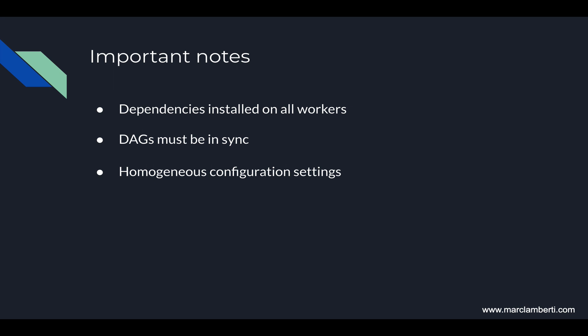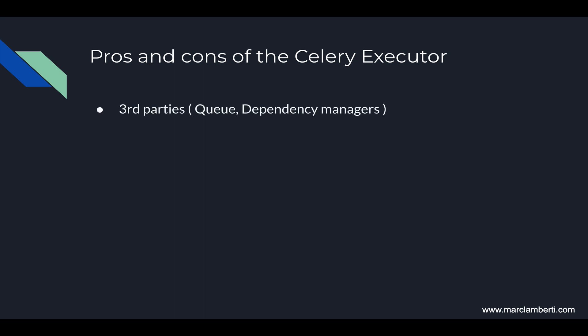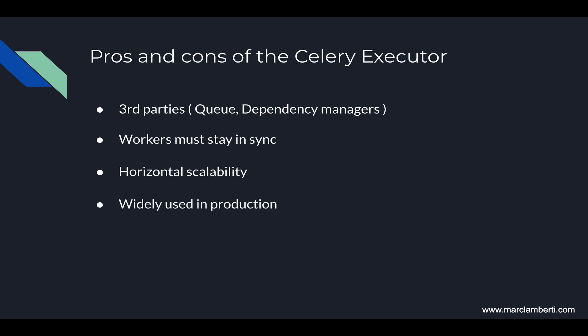Moving from the local executor to the Celery executor is another story, so be ready for it. As for the pros and cons: on the downside, there are third-party tools to maintain such as RabbitMQ and a dependency manager, which increases the complexity of your architecture and the learning curve for your teammates. Workers must also stay in sync — same DAGs folder, same configuration settings, and same installed dependencies — otherwise errors will arise. On the upside, the Celery executor allows you to scale Airflow as much as you want through horizontal scaling: adding a new machine increases the number of tasks you can process. Finally, the Celery executor is widely used in production and very reliable. That's it for the theory — let's see the Celery executor in a real example in the next video.